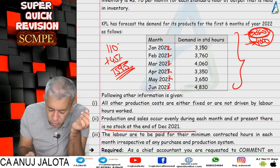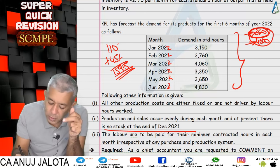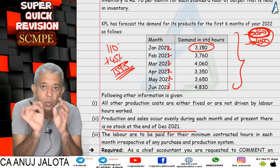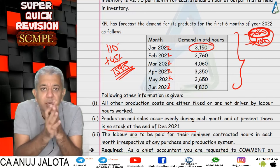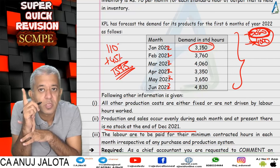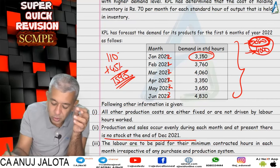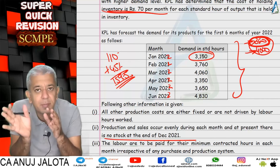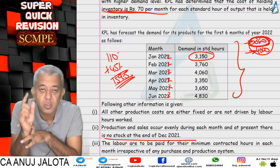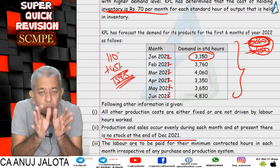The opening stock at the start was zero (no stock at end of December 2021). Opening stock plus production of 3,800 standard hours, less demand, gives closing stock. Closing stock of one period becomes opening stock of the next. Find average stock = (opening + closing) / 2, then multiply by the carrying cost of rupees 70 per month.